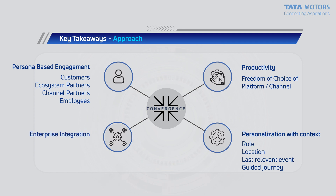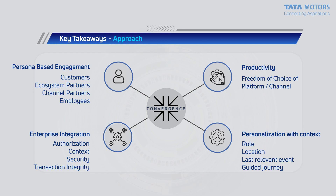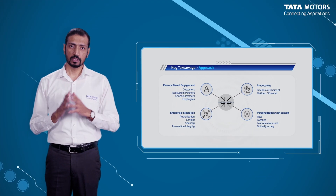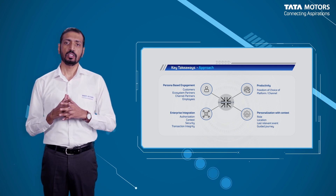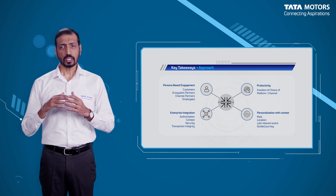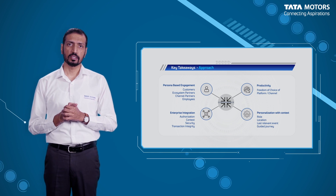Combining these three areas — personalization, context, and productivity — gives us an effective digital product. Two points I'd like to mention in the context of enterprise from a technology implementation perspective: enterprise integration is absolutely critical. Without enterprise integration aspects of authorization, context, security, and transaction integrity, the product itself will not have the effect it needs to have in the field. And paramount is convergence — we have to keep the focus of process approach, customer experience, and business outcome all converging, with technology supporting that convergence.